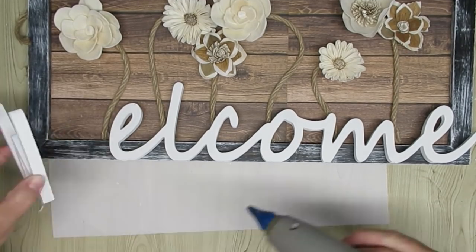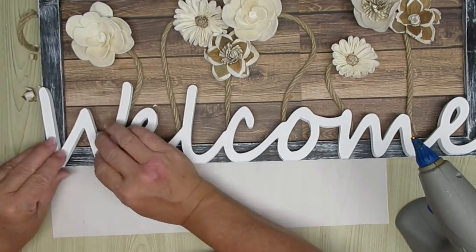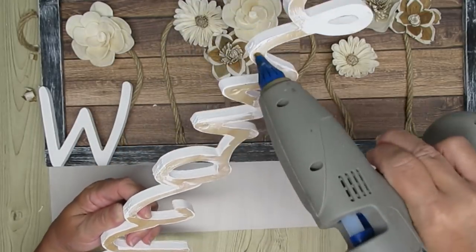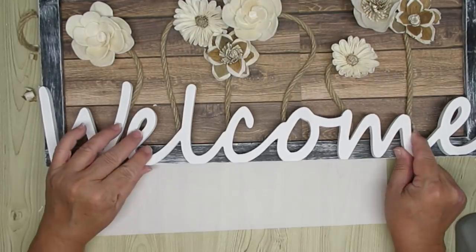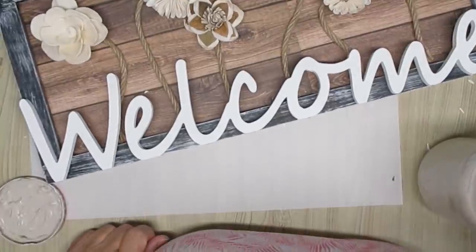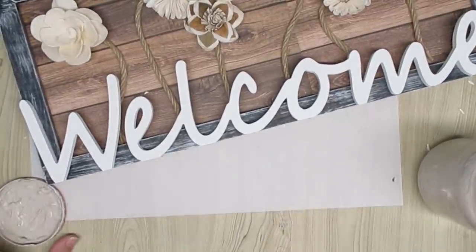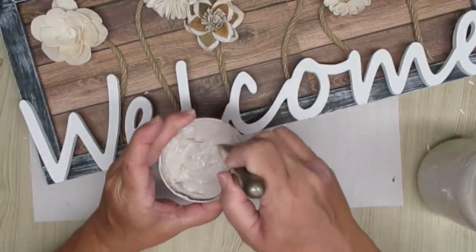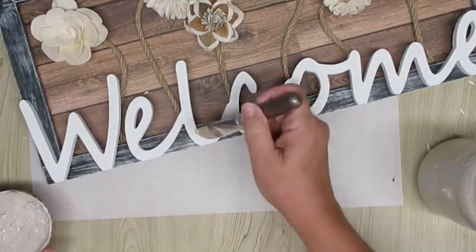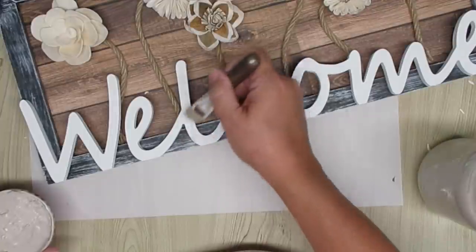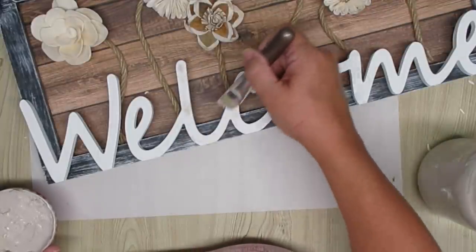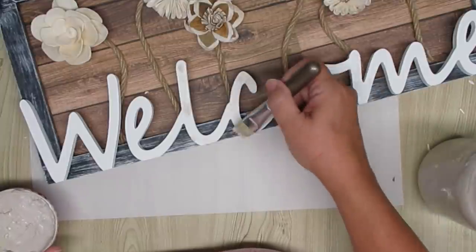Once I had all the flowers the way I wanted them, I just used some hot glue on the bottom of the letters and glued them down on the bottom frame edge of the sign. And then I took a little baby chip brush and some of this mushroom paint that I have and dry brushed over the words welcome. I just thought they were a little too stark white and didn't really blend in with the project and just doing this little bit of dry brushing really made a difference.